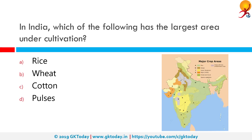In India, which of the following has the largest area under cultivation? India is one of the world's largest producers of rice, accounting for 20% of the world's rice production. Rice in India is a pre-eminent crop and is the staple food of the people of the eastern and southern parts of the country. The correct answer here being rice.